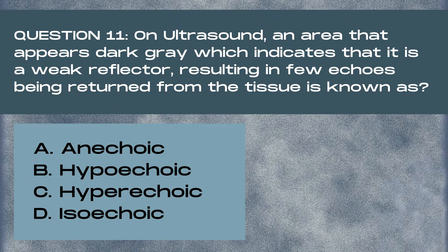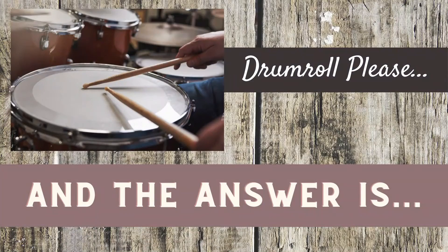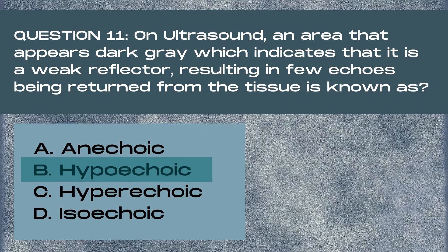Question 11. On ultrasound, an area that appears dark gray, which indicates that it is a weak reflector, resulting in few echoes being returned from the tissue, is known as anechoic. The two areas on an ultrasound are dark gray, and they have fewer echoes, or a darker brightness level, than the medium gray color of the fat in the breast.